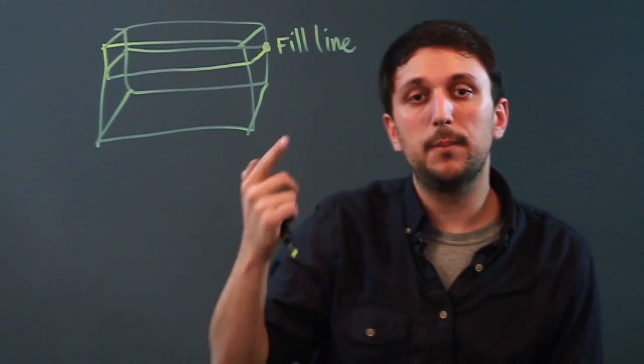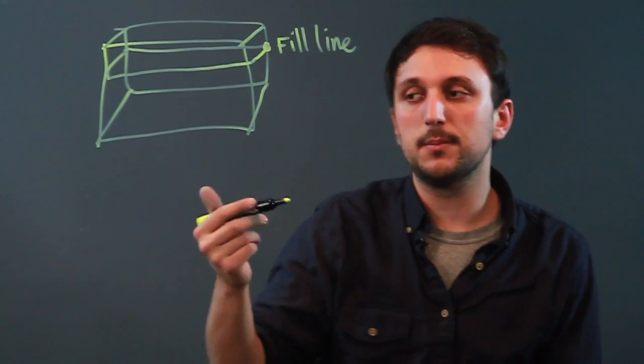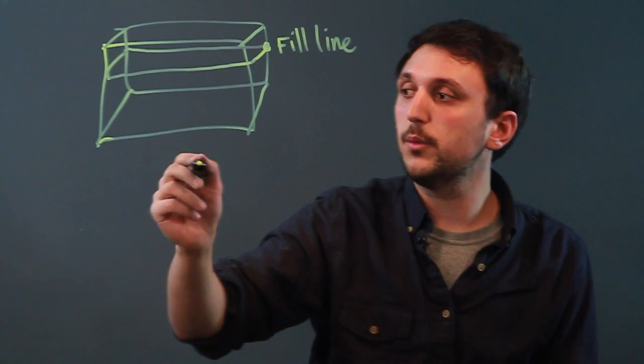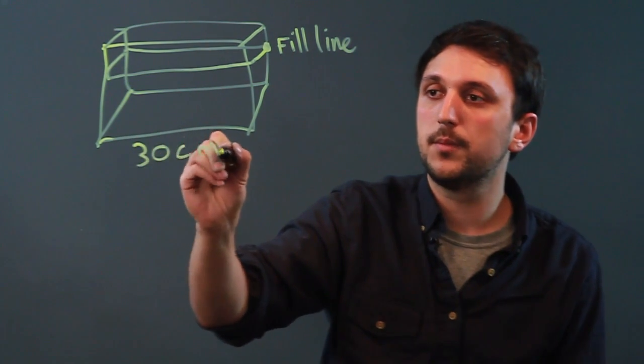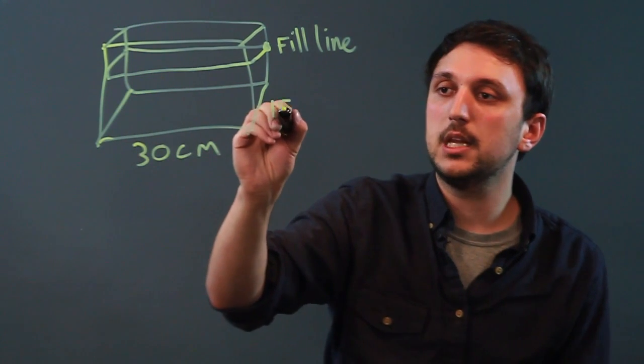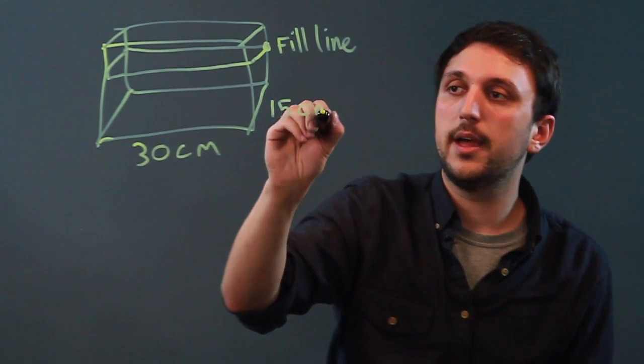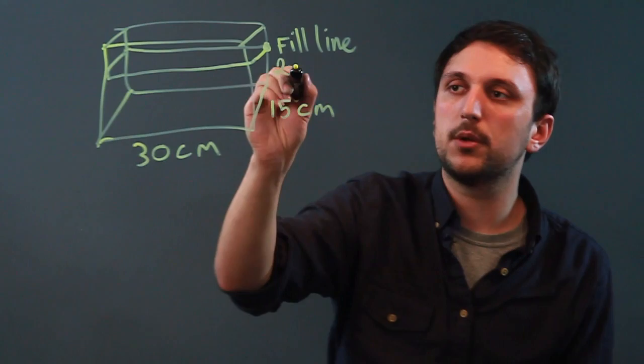So if we're dealing with liters, the best thing to do is to measure this in centimeters. So let's say we have a fish tank that is 30 centimeters wide and then 15 deep and then let's say it goes up 20 centimeters.